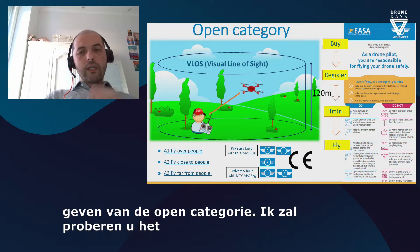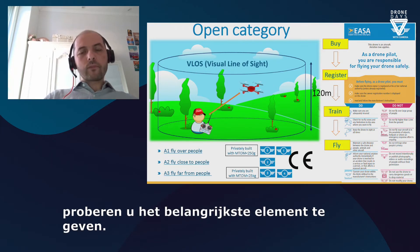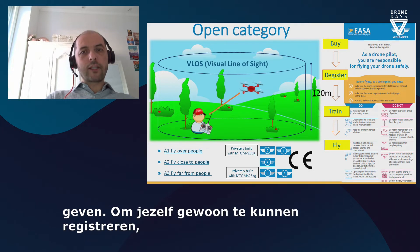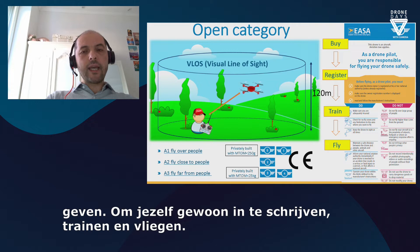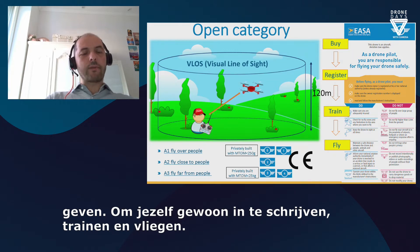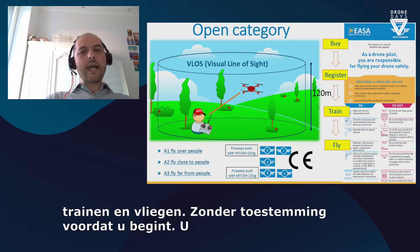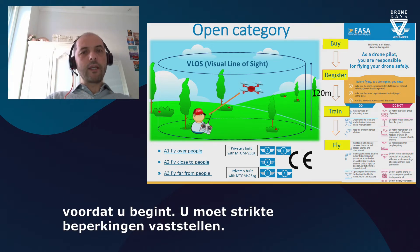Let's give an overview of the open category and its main elements. In order to allow you to just buy, register yourself, train, and fly without asking for any authorization before starting the operation, you need to comply with very precise, strict limitations.